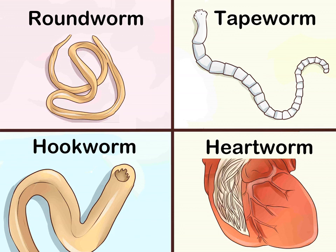Heartworm is spread by insects such as mosquitoes and is therefore endemic in certain areas where insects are more common. High risk areas include the southeastern and midwestern United States and along the Atlantic coast. Lungworm is becoming more prevalent and is spread via fox feces, slugs, and snails. Contact with any of these is considered a risk factor.